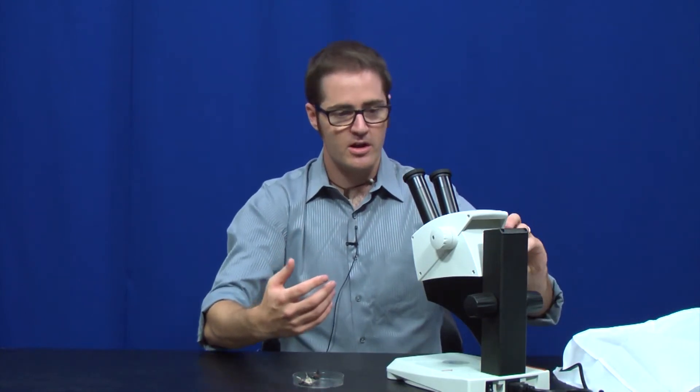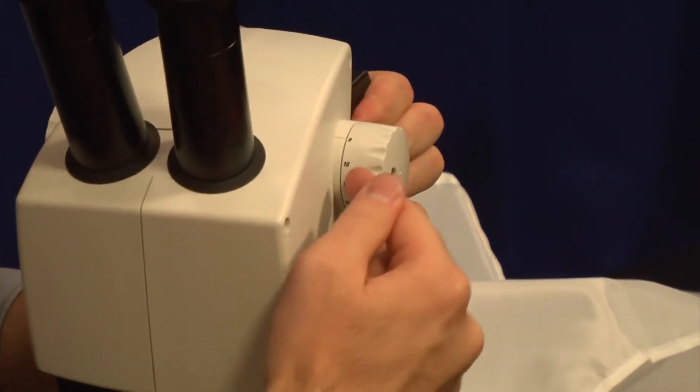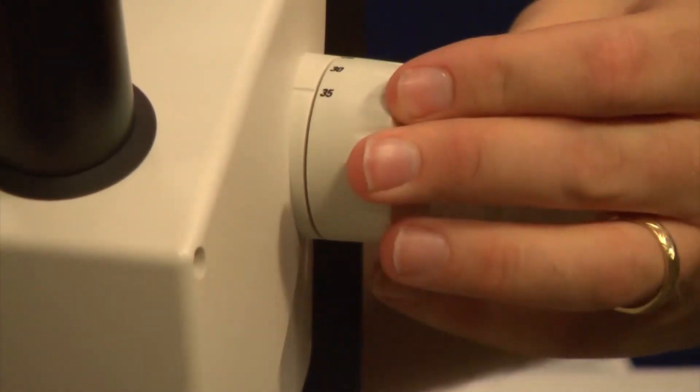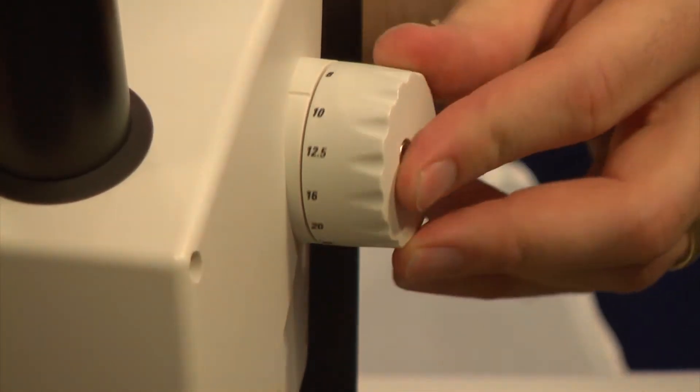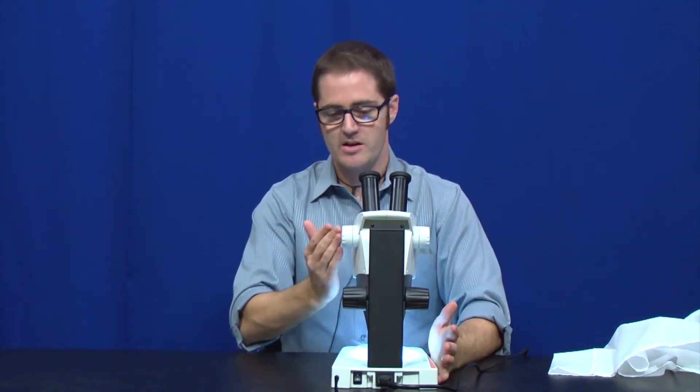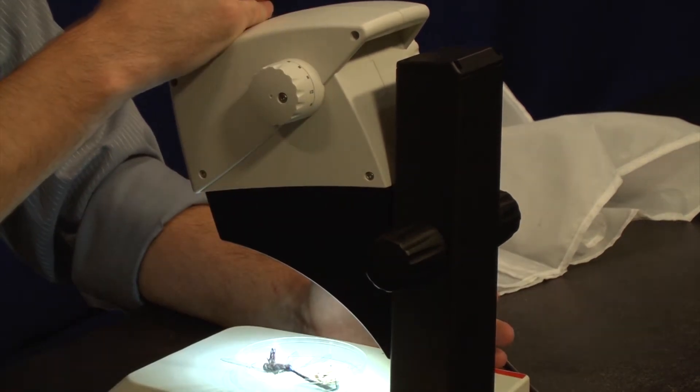The white knob is going to be your zoom. As I twist it, we're going to increase our magnification and decrease accordingly. On the right-hand side of that white knob, there are markings for how much magnification we're using, so the student knows where they're at. The magnification range for the EZ4 microscope is from 8x up to 35x, and that's fixed with a 10x eyepiece.